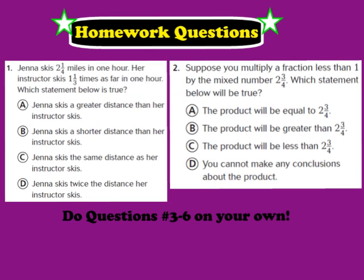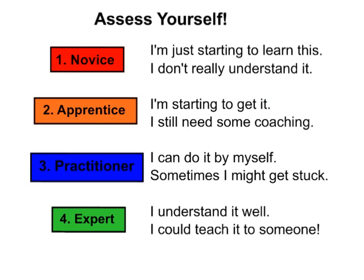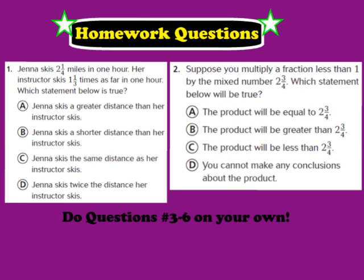Your homework for tonight is to complete question number 1 and question number 2, as well as numbers 3 through 6, found in your GoMath workbook on page 160. Don't forget to assess yourself somewhere on your homework page: are you a 1 novice, 2 apprentice, 3 practitioner, or 4 expert? We hope you have a great evening and look forward to seeing you in class tomorrow. Thank you.